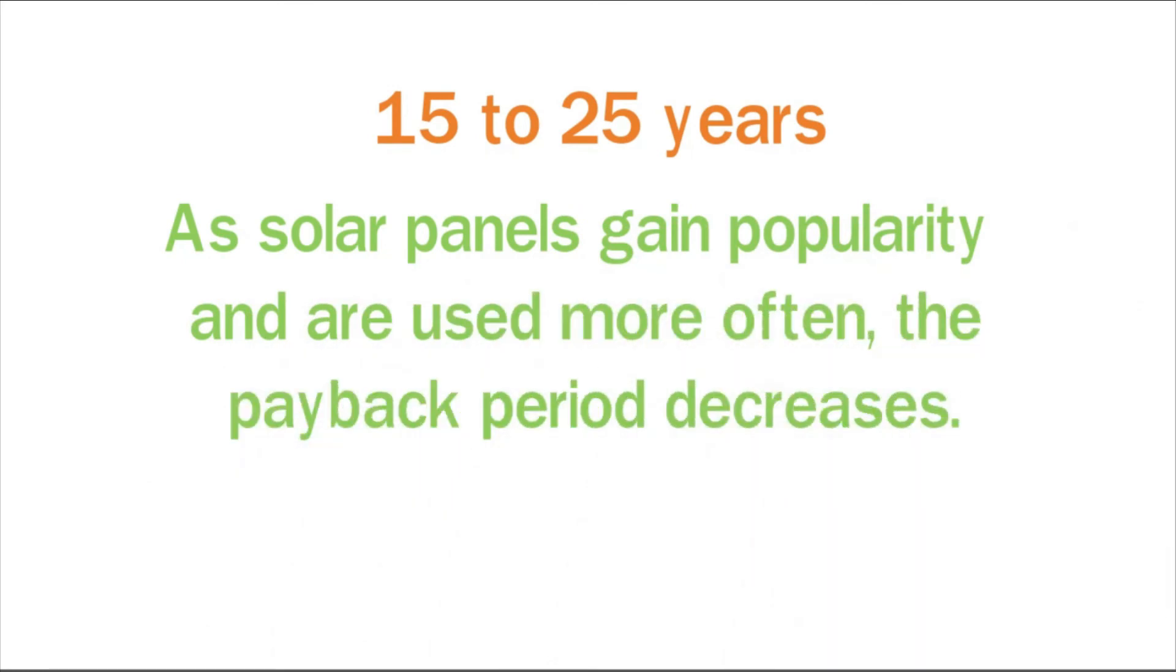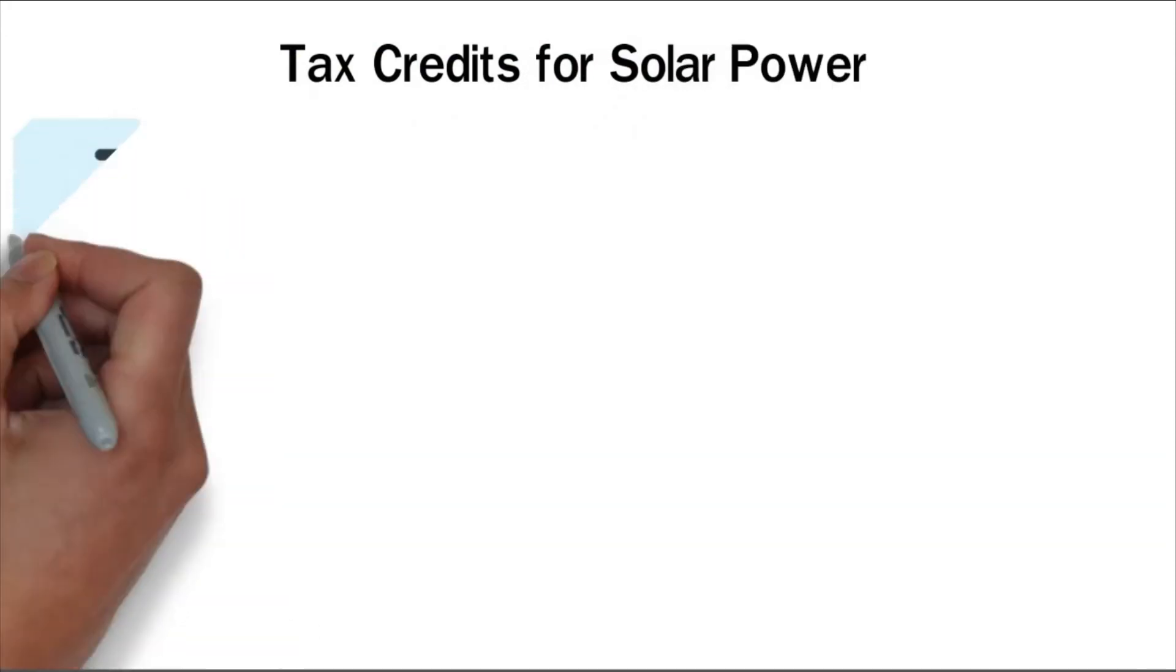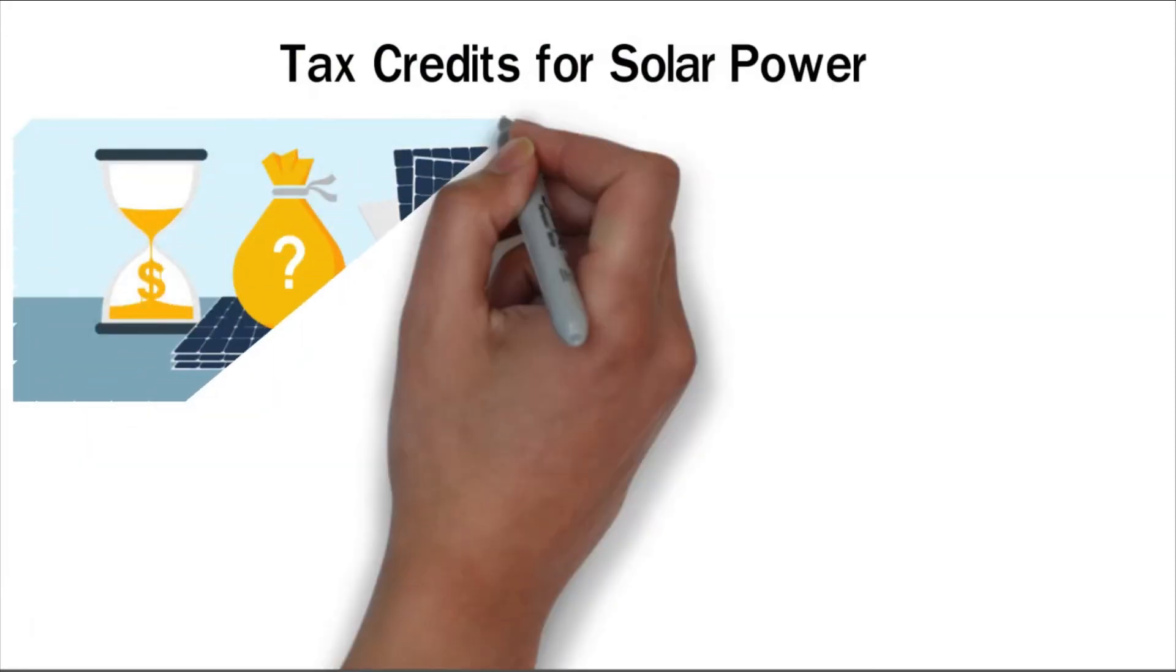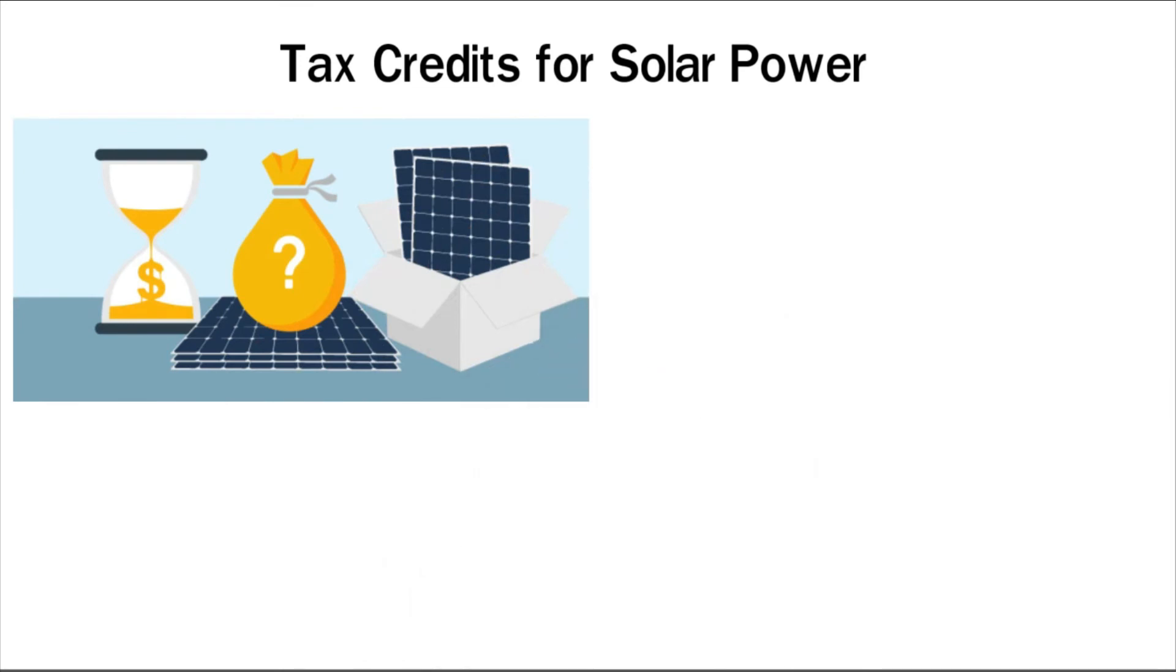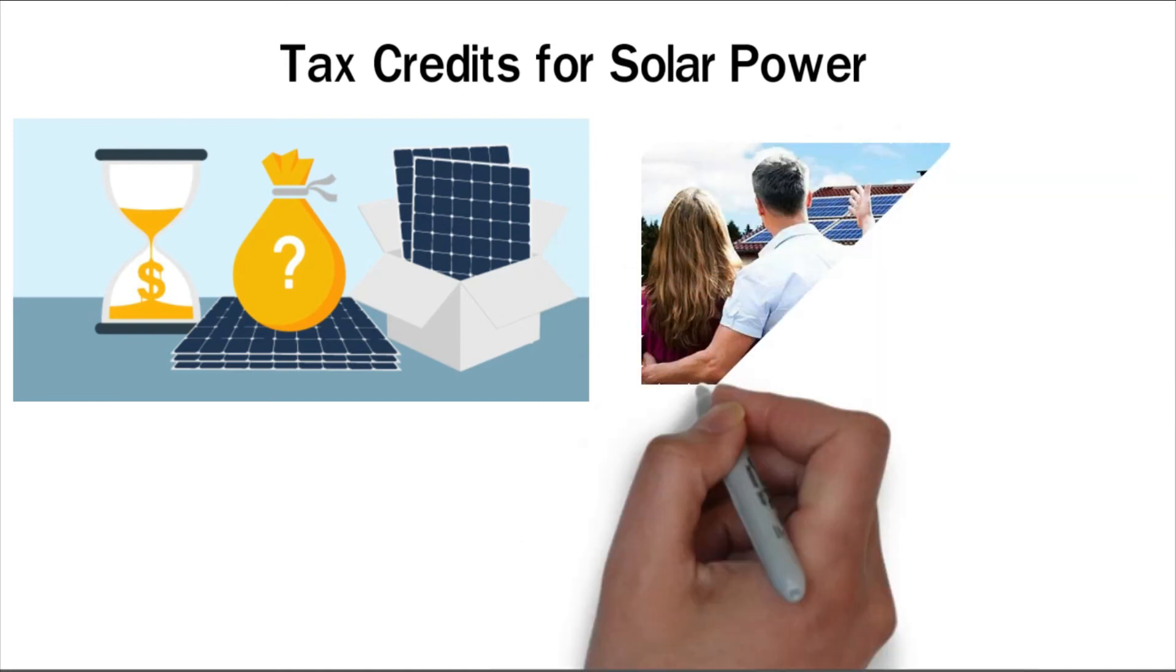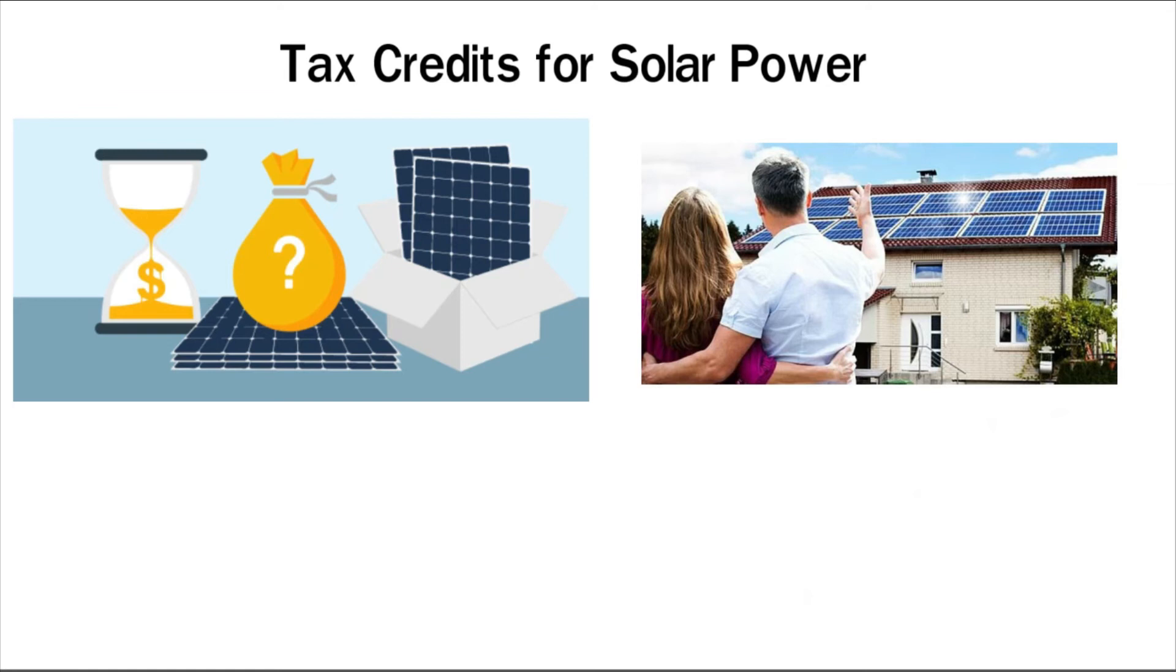Tax credits for solar power. The federal government offers a tax credit for solar energy installation. A credit is money given by the government to make something cheaper. Credits are also given to people and businesses to help them pay for special projects. The government also uses credits so people will choose to do things the government wants.